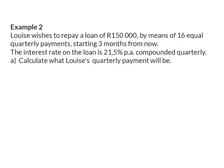Example 2. Louise wishes to repay a loan of R150,000 by means of 16 equal quarterly payments starting three months from now. The interest rate on the loan is 21.5% per annum compounded quarterly. Question A: Calculate what Louise's quarterly payment will be.